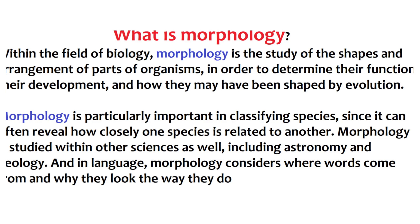Morphology comprises the shape, structure, color, pattern, and size of the exterior parts — known as external morphology or eidonomia — and the shape and structure of the internal components such as the bones and organs, known as internal morphology or anatomy.